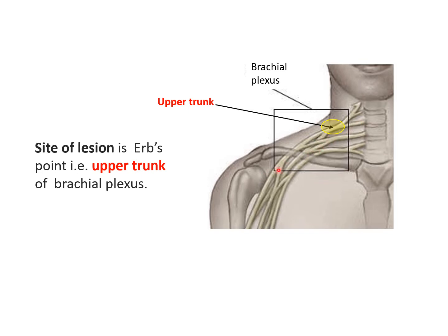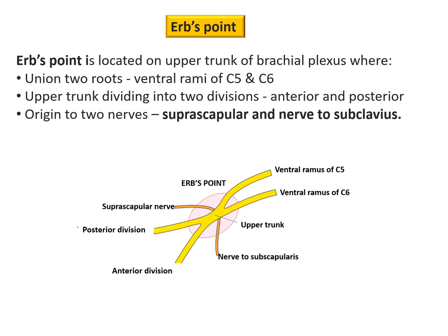In this picture we can see the brachial plexus. This is the supraclavicular part of the brachial plexus showing the roots from C5, C6, C7, C8, and T1, and the three trunks of the brachial plexus — upper trunk, middle trunk, and lower trunk. The upper trunk, shown here in yellow, is the site of the lesion and is formed by the joining of ventral rami of C5 and C6 spinal nerves. Erb's point is located on the upper trunk where the ventral rami of C5 and C6 spinal nerves unite.